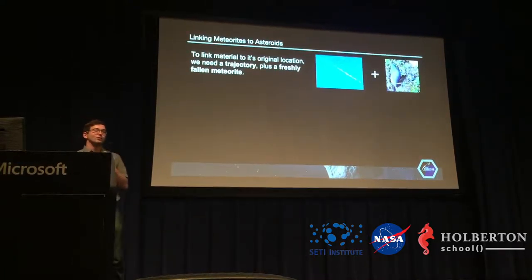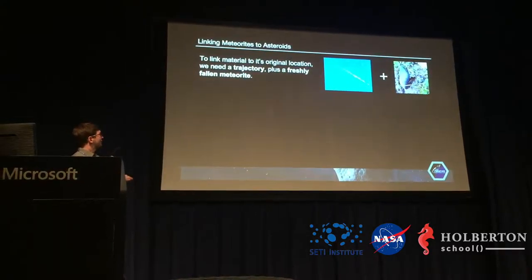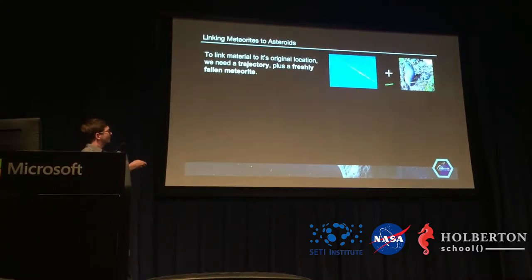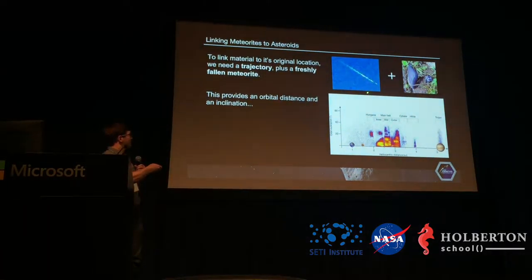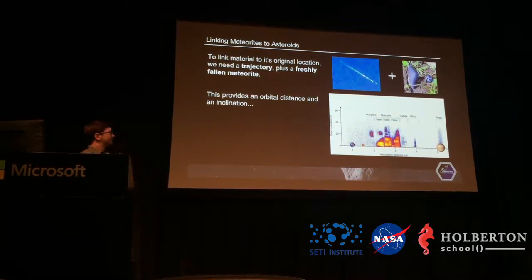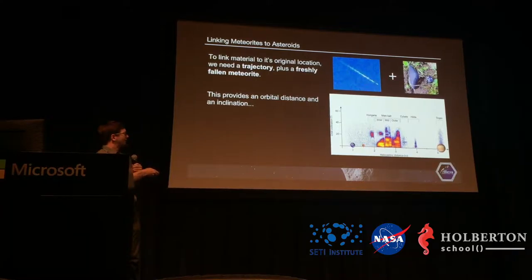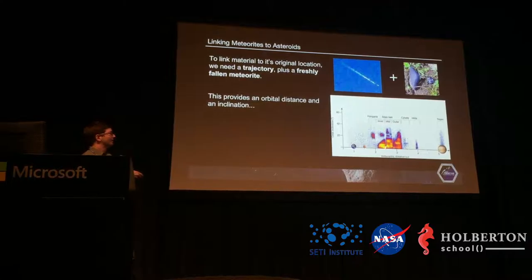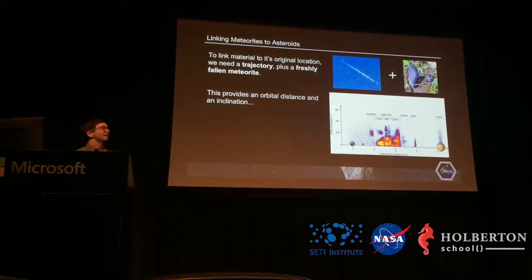The way you link an actual physical meteorite sample to its asteroid family is by getting a meteorite sample and a trajectory. Using that trajectory provides an orbital distance and an inclination. As you can see on this plot, you have the orbital distance of different asteroids and their orbital inclination. If you have an orbital distance, it tells you about the resonance that the meteorite came from.